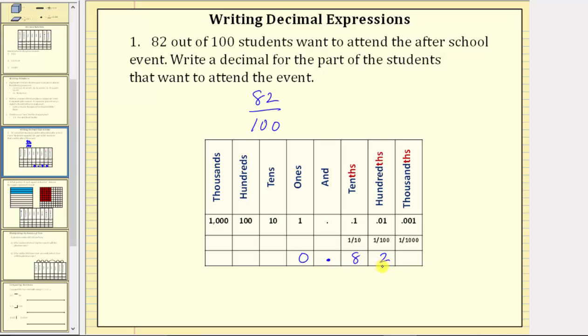We read this decimal just like we read this fraction as 82 hundredths. Notice how when reading a decimal, we always use the place value furthest to the right. So again, 82 hundredths as a decimal is equal to 0.82.